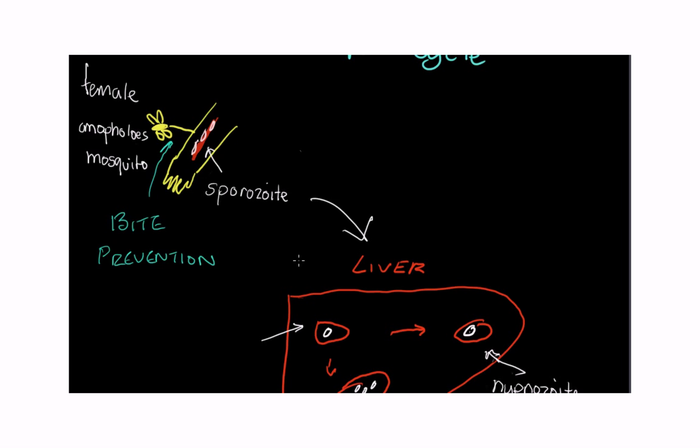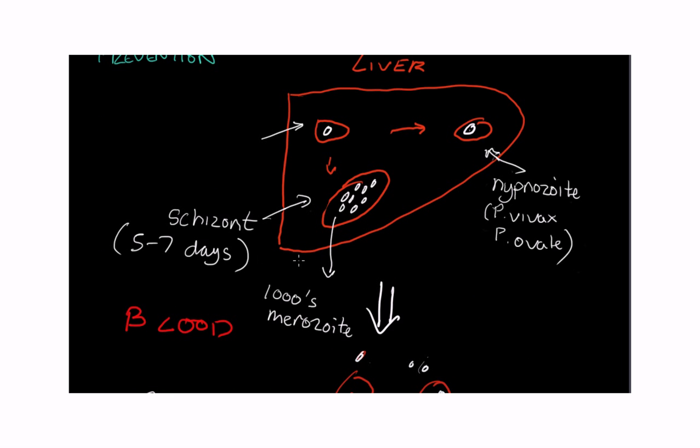But then, if that doesn't work, we also use chemoprophylaxis, so we use drugs. And there's two major categories of chemoprophylaxis. The first one, which is known as causal prophylaxis, and that actually attacks the liver stage, which lasts five to seven days, and the main drug we have to use that is atovaquone.